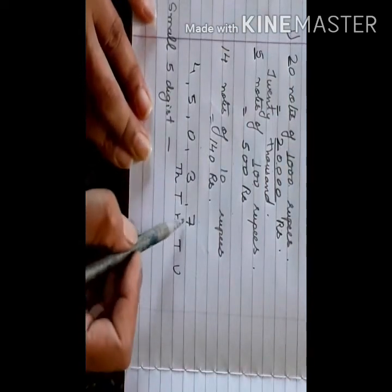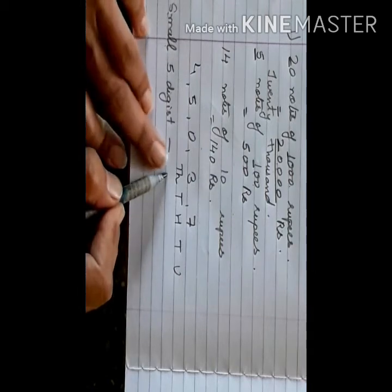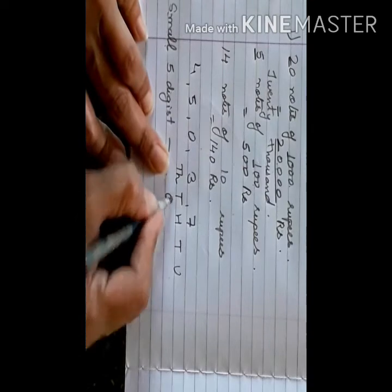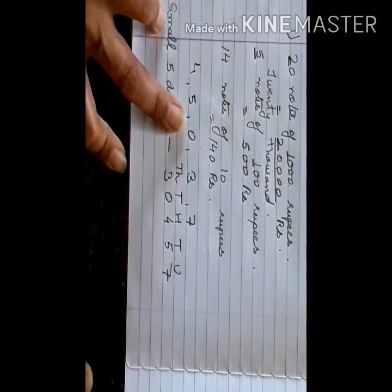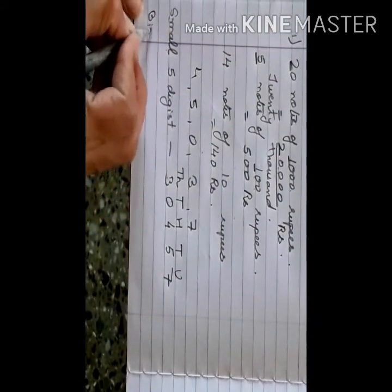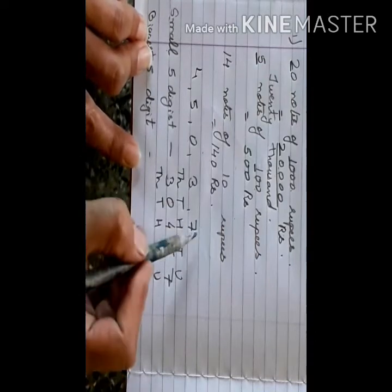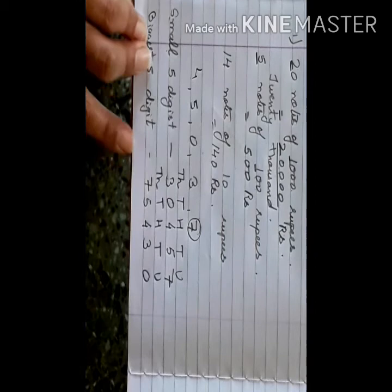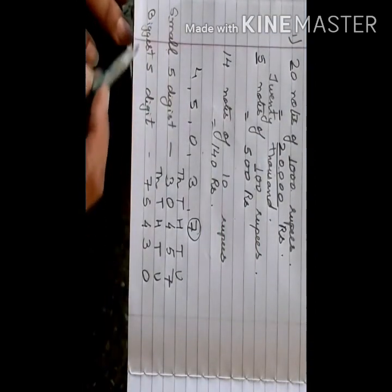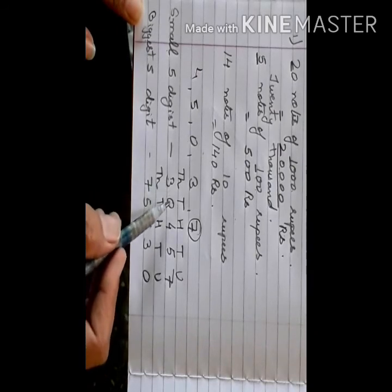For the smallest five-digit number, the place values are units, tens, hundreds, thousands, and ten-thousands. Zero is the smallest digit, but placing zero at the ten-thousands place gives only a four-digit number, so zero goes in the second place. The arrangement becomes: 30,457. For the biggest five-digit number, arrange from largest to smallest: seven, five, four, three, zero — giving 75,430. Remember: for the biggest number, zero goes at the last place; for the smallest five-digit number, zero goes in the second place.